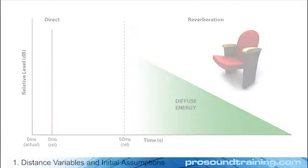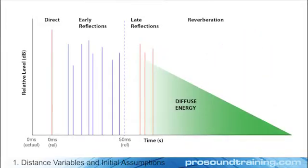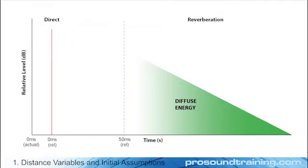Proceeding under these assumptions, the early-to-late energy ratio simplifies to the direct-to-reverberant energy ratio. This ratio can be expressed as a fraction of sound pressures evaluated by division, or more commonly as levels in decibels, evaluated by subtraction.